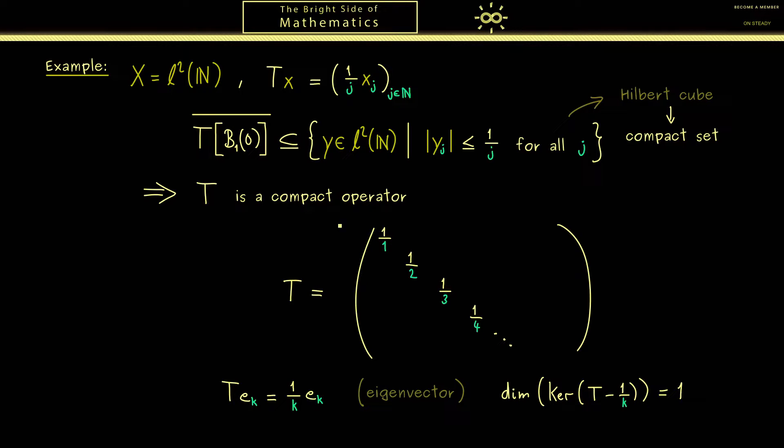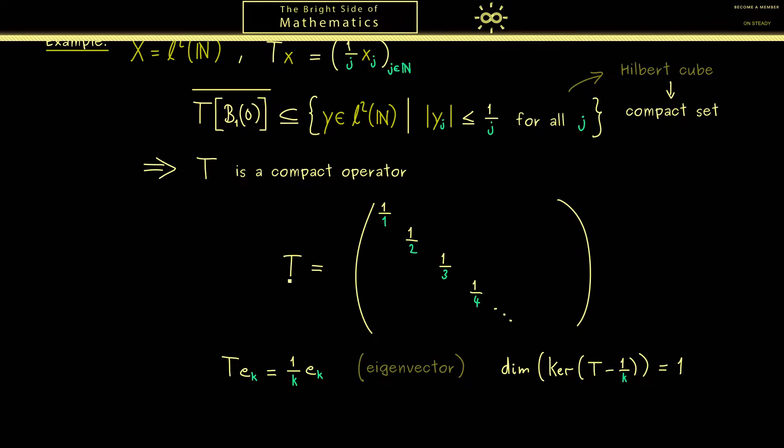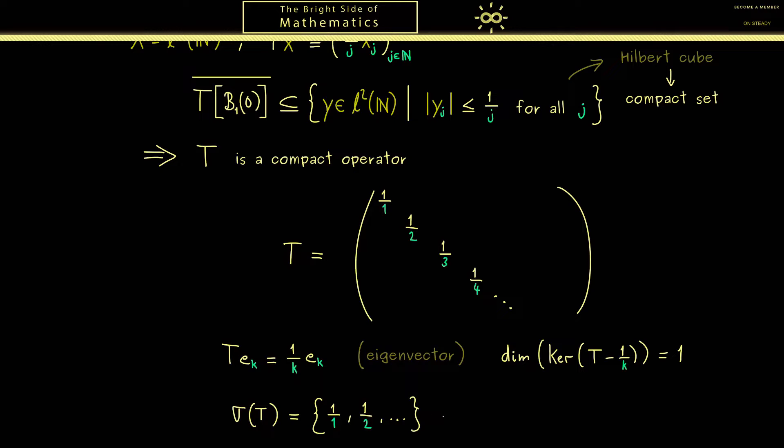And then we see this is the spectrum with eigenvalues, and the sequence converges to 0. So this is what we know from before, if we have infinitely many eigenvalues, the sequence has to converge to 0. In other words, we can immediately write down the spectrum of this operator. So we simply have the eigenvalues and 0. And indeed, in this case we see this one is the point spectrum, and 0 is the continuous spectrum.